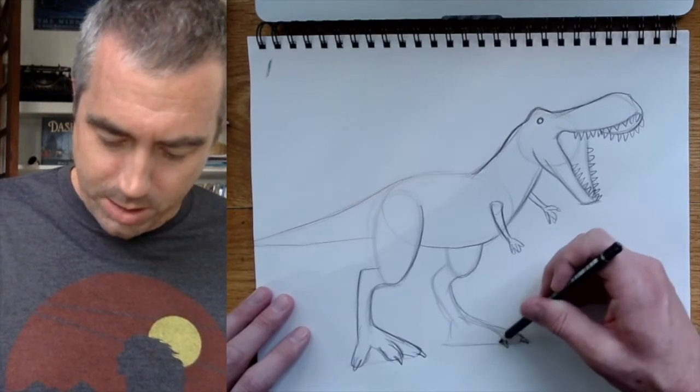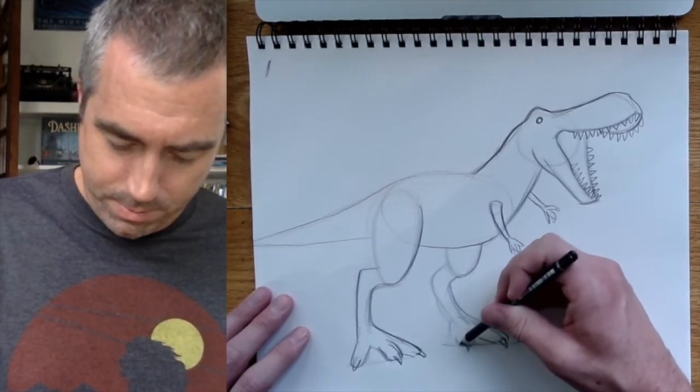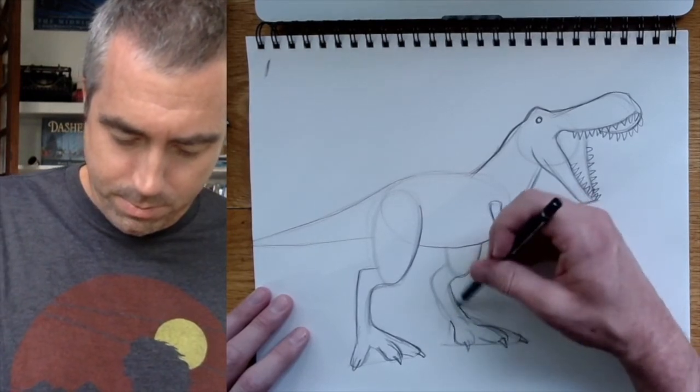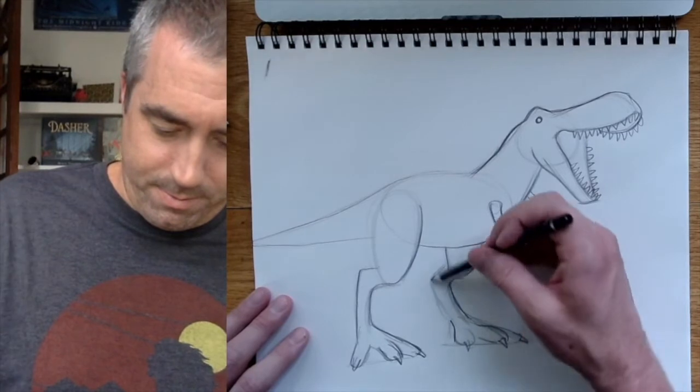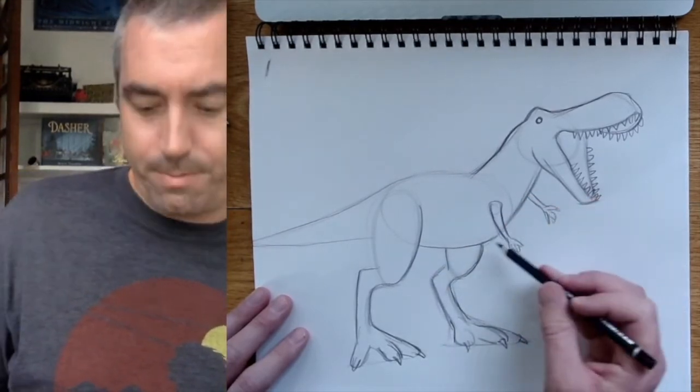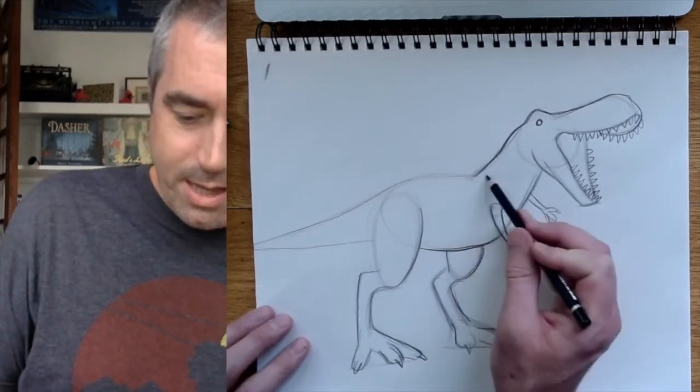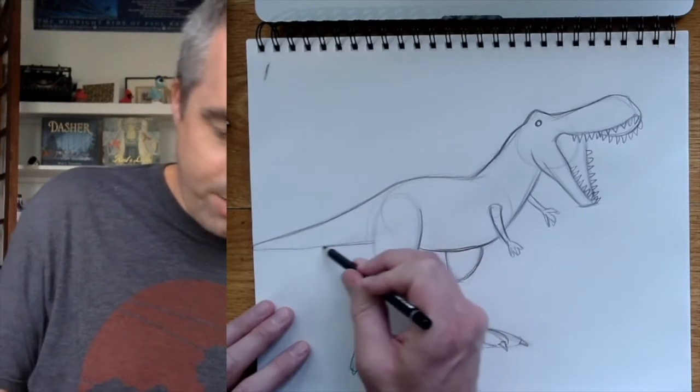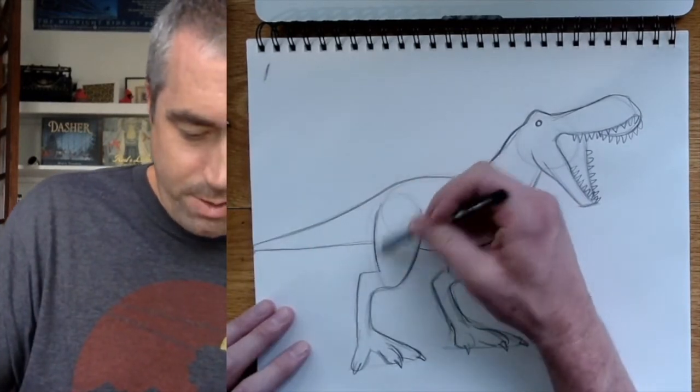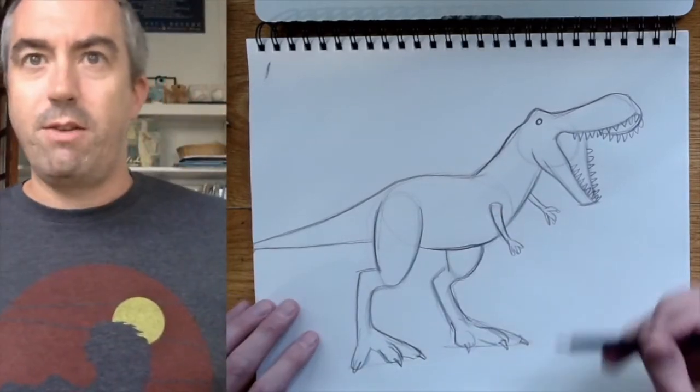I think they'd be called talons. There we go. And I'll just extend that tail, go over that too. Now we're getting somewhere right now. That's starting to look like a T-Rex.